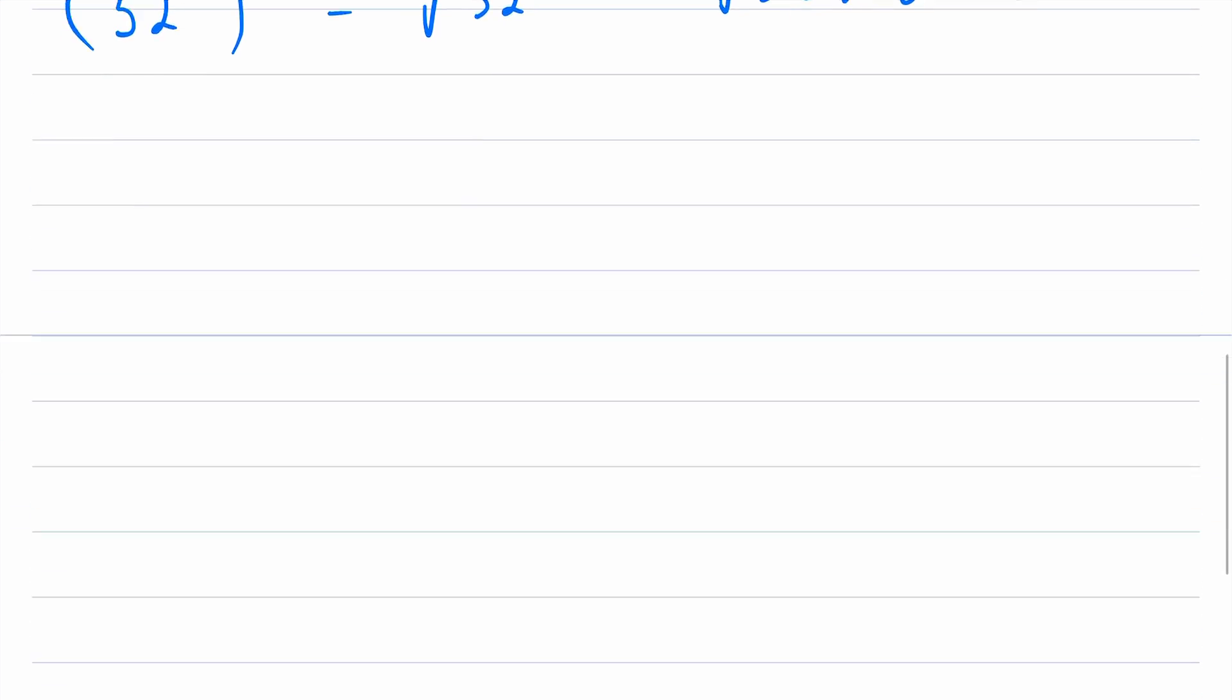Alright, a couple more quick examples. And I'm just going to make these up randomly. So if you were to compute them, they would not come out to nice numbers. Let's say we had 9 to the power of 7 over 4. What is the meaning of this fractional exponent? Well, remember, the denominator tells us the root that we should take. So we take the fourth root of 9. The numerator is left as an exponent. So we raise this to the power of 7.